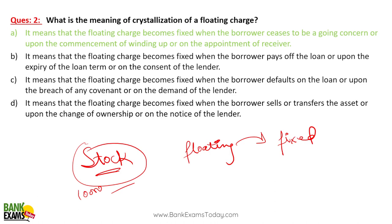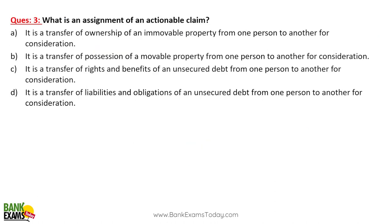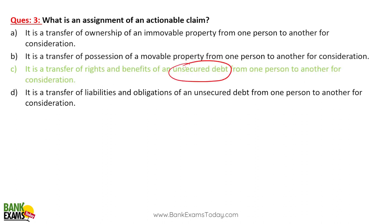The floating charge becomes fixed because the borrower ceases to be a going concern or the business is being wound up. What is an assignment of an actionable claim? It is a transfer of rights and benefits of an unsecured debt from one person to another — generally the bank transfers its rights.